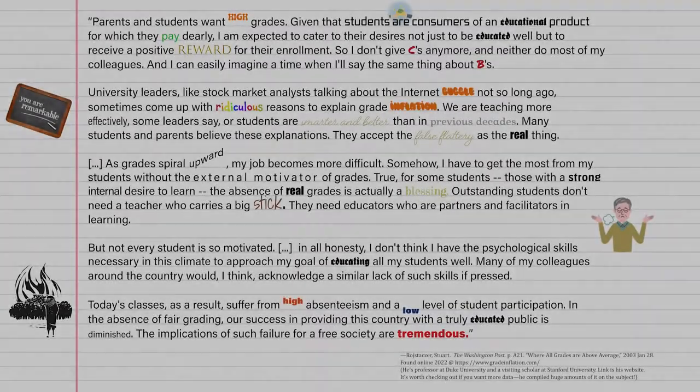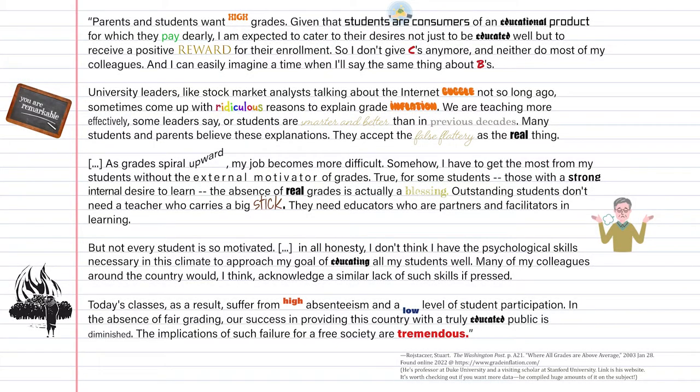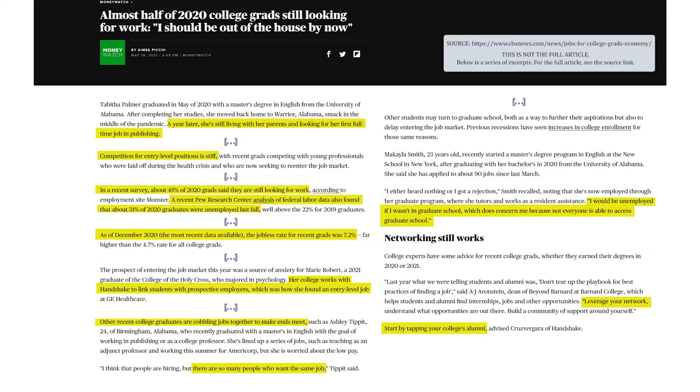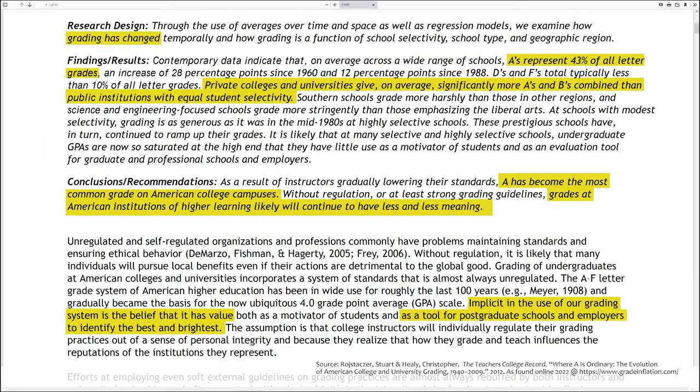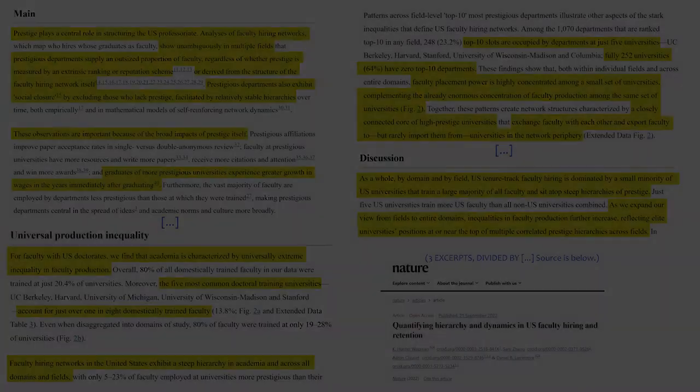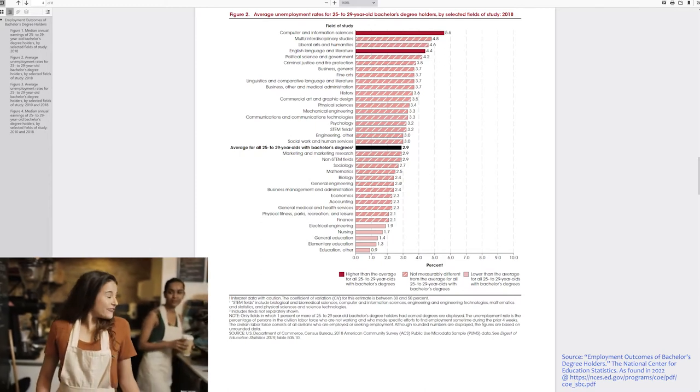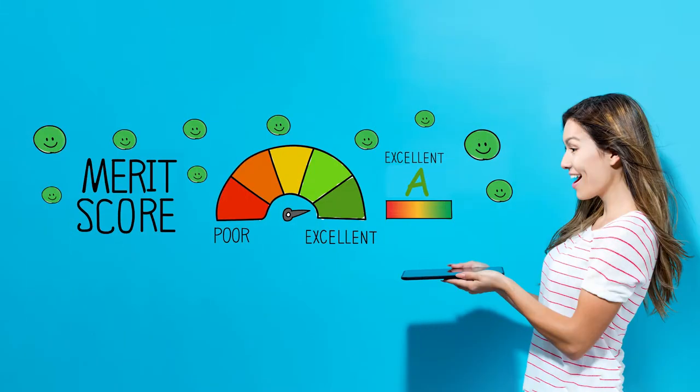This problem isn't unique to Harvard either. It also has consequences after graduation for everyone who relies on their college degrees from every school because of selection processes that do pay attention to GPA and little else. A 2012 study in the teacher's college record by Stuart Royce Dodger and Christopher Healy found that A's represent 43% of all letter grades, an increase of 28 percentage points since 1960 and 12 percentage points since 1988. Private colleges and universities give more top grades than public institutions with equal student selectivity. It said, does it matter? Given that, the study says, college grades can influence a student's graduation prospects, academic motivation, postgraduate job choice, professional and graduate school selection, and access to loans and scholarships, the answer is yes.